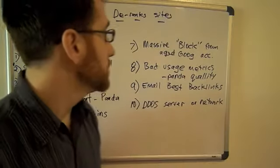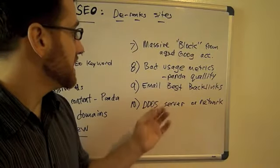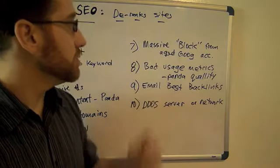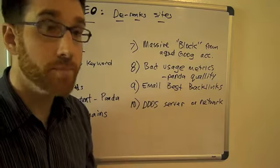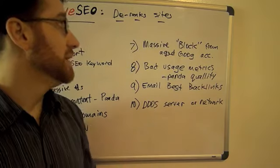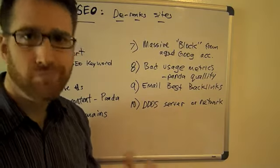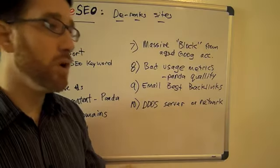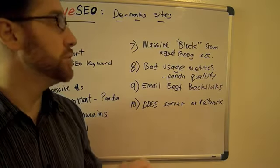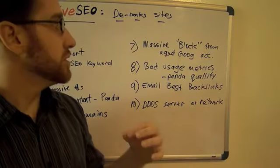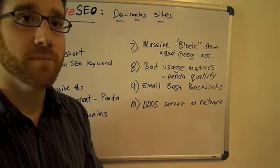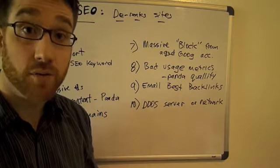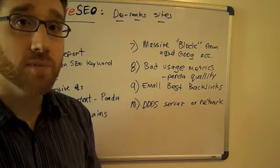Here's the rest of the tactics. These two work on the same kind of principle. The first one is block: hypothetically, you get IP addresses from all over the world and aged Google accounts from all over the world to go and block a certain site. Matt Cutts has already admitted that the block signal is being used in the Panda algorithm, so that will definitely cause them some kind of trouble.